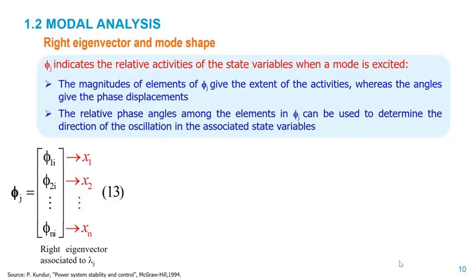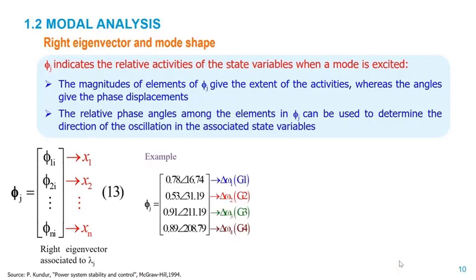These right eigenvectors are used to analyze the shape of the oscillation. We take entries related to the rotor speed deviations: the magnitudes indicate the extent of excitation of oscillations related to rotor speed, whereas the angle indicates the angular displacement between these oscillations. If we monitor the rotor angle measurements of these machines, we observe these displacements as inferred from the entries of the right eigenvectors. Plotting these entries in the complex plane, we see that two generators oscillate against the other two.